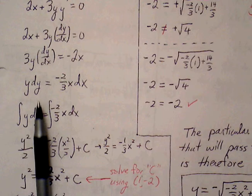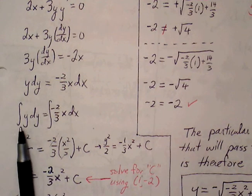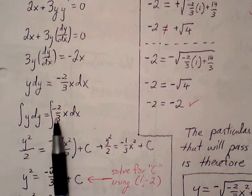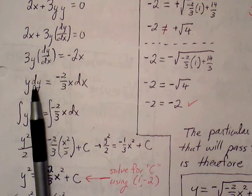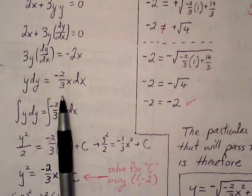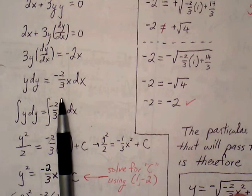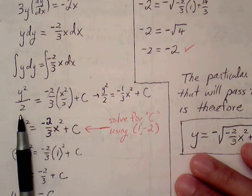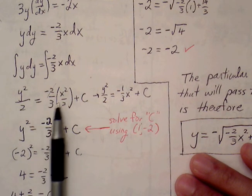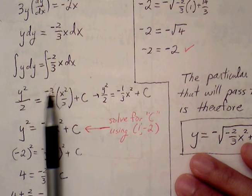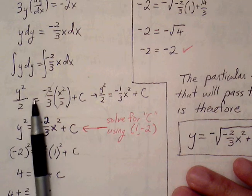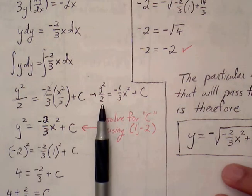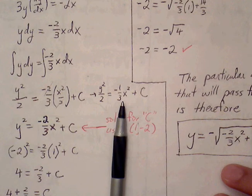Let's go ahead and find the indefinite integral of both sides. Integral of y dy equals the integral of negative 2/3 x dx. I'm taking steps to isolate the y's on the left and everything else on the right, because my goal is to eventually solve for y. Using the power rule: the integral of y is y squared over 2. The integral of negative 2/3 x is negative 2/3 times x squared over 2 — the 2's cancel out. So y squared over 2 equals negative 1/3 x squared plus c.